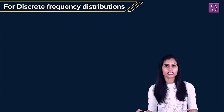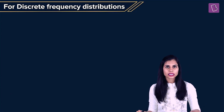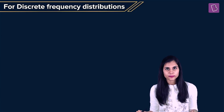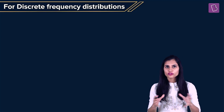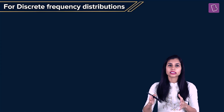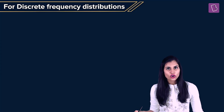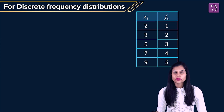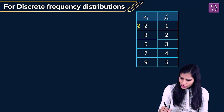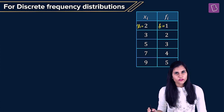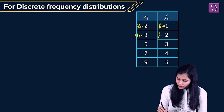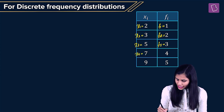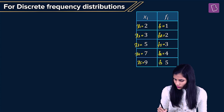It's time to compute the measures of central tendency for the first type of grouped data, that is the discrete frequency distribution, wherein the data is arranged in a tabular format in which each distinct observation is written along with its respective frequency. Let's say I am given this data set expressed in the format of a discrete frequency distribution, where observation X1 has frequency F1, X2 has F2, X3 has F3, X4 has F4, and X5 has F5.